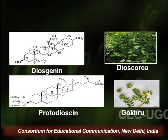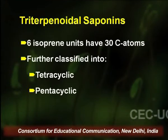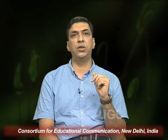Moving on to triterpenoidal saponins — as the name indicates, these are compounds made up of 6 isoprene units. Since one isoprene unit has 5 carbons, these triterpenoidal compounds have 30 carbon atoms. Depending upon the number of rings in their structure, we can further classify triterpenoidal saponins into tetracyclic triterpenoidal saponins and pentacyclic triterpenoidal saponins.